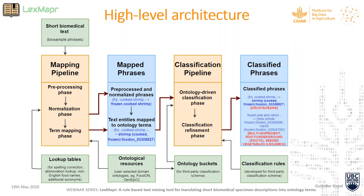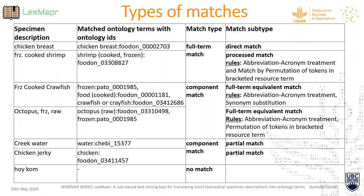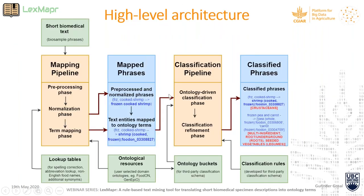These clean phrases are applied with successive mapping rules based on light natural language processing, regular expressions, and other lexical-syntactic structure rules. The clean phrases are mapped to relevant ontology terms. For example, 'frozen cooked shrimp' is mapped to 'shrimp cooked frozen' from FoodOn with its ontology ID. This output of text entities mapped to standard ontology terms is a very useful output and can be the basis of many ontology-driven applications.